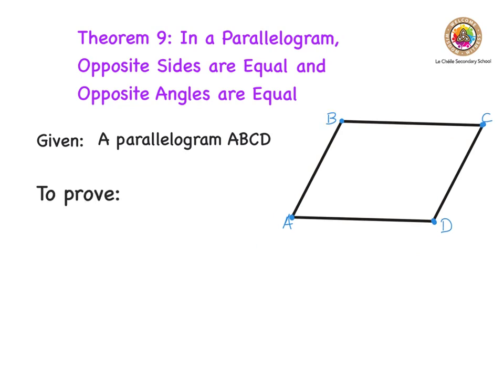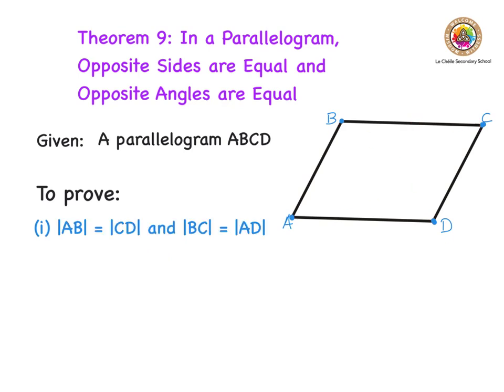In this theorem we clearly have two things to prove. One, we have to prove that opposite sides are equal. Examining that: AB is opposite to CD, so AB equals CD. That's one part. But equally, BC is opposite to AD, so we have to prove that both those sides are equal to each other. That's the first part of our proof.